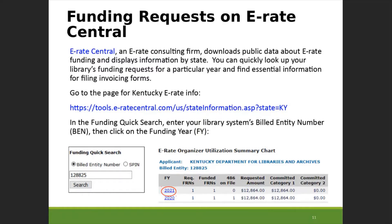Another way to look up funding information for a quick overview is e-rate Central. It's a consulting company that downloads public e-rate program information and posts it in a format that's easier to read than USAC's databases. On their state page they have a funding quick search where you enter the build entity number for your library system, and you get a page showing all funding years. In the left column you can select a funding year to see more details about each funding request.